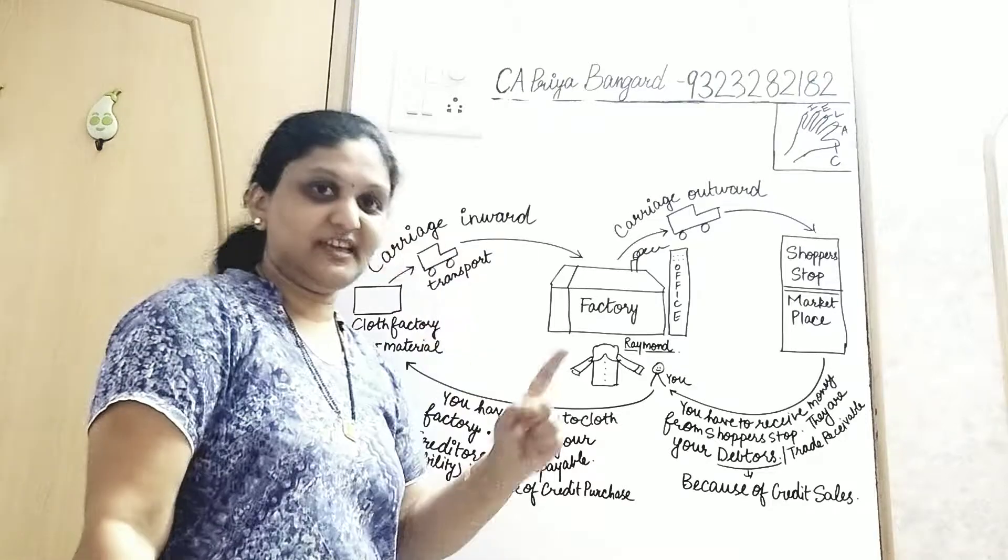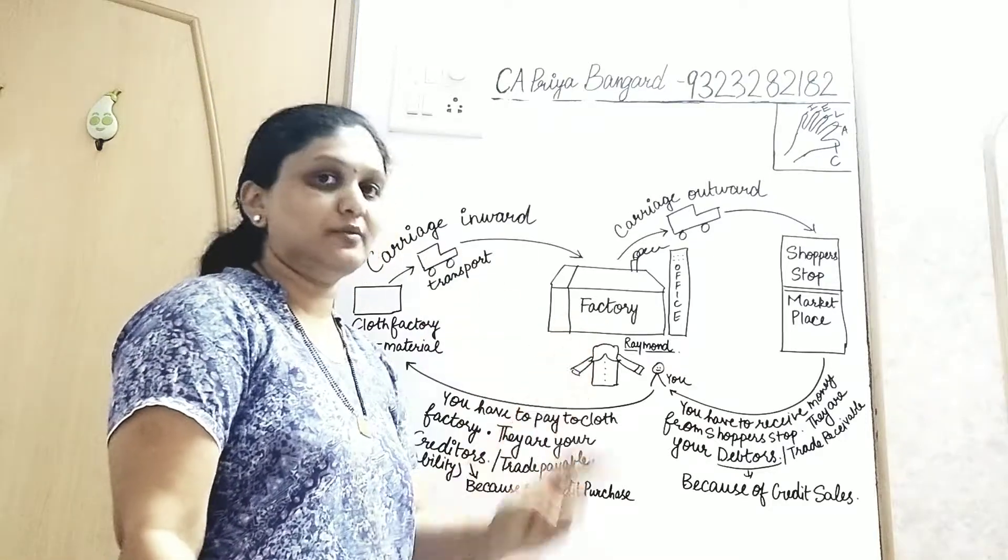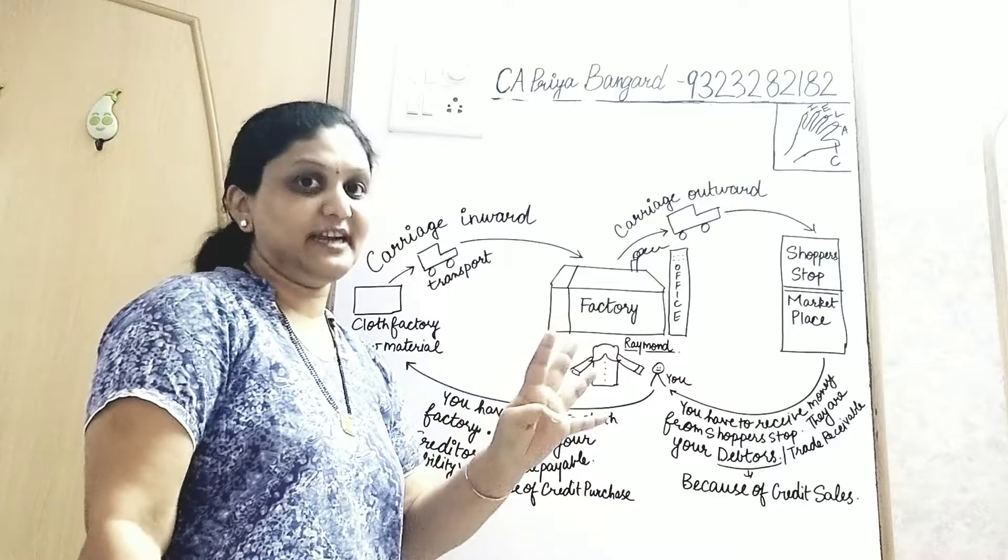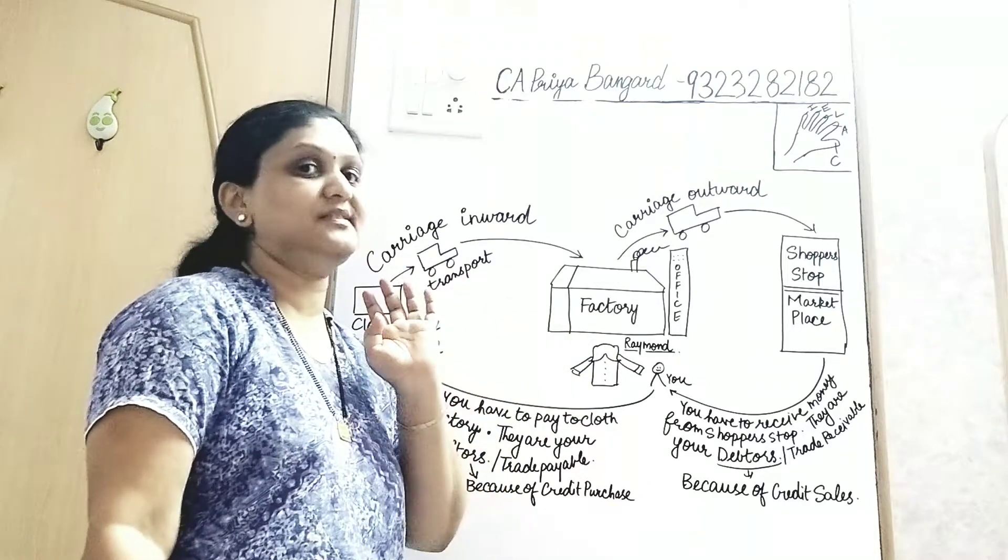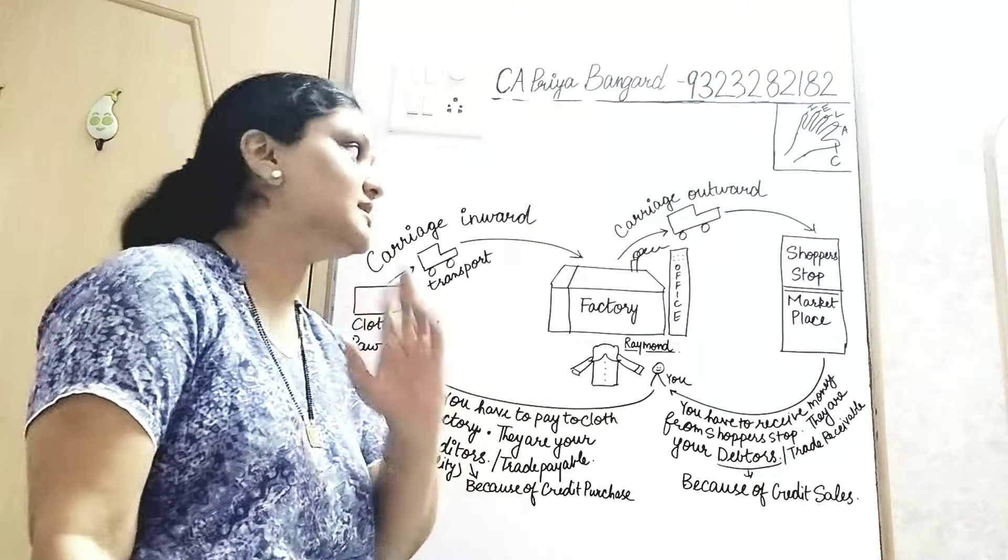Let us understand what is carriage inward, carriage outward, creditors and debtors. These four concepts are very common, and I have seen children making a lot of mistakes in this.